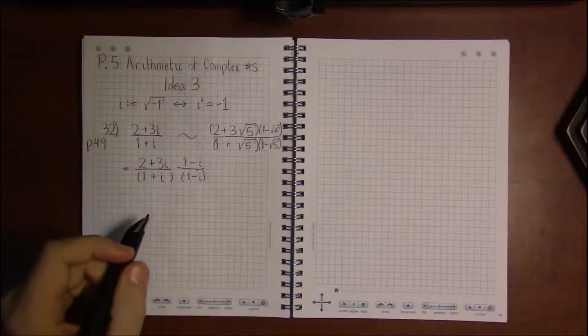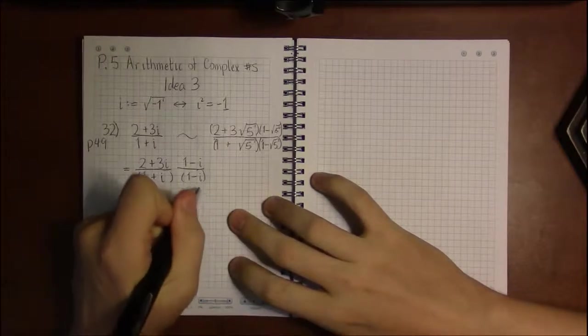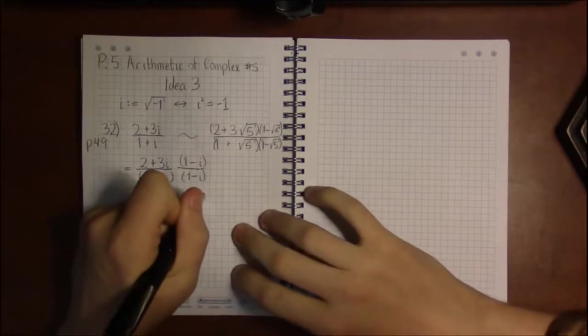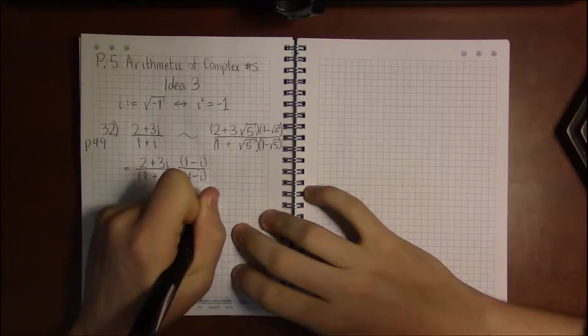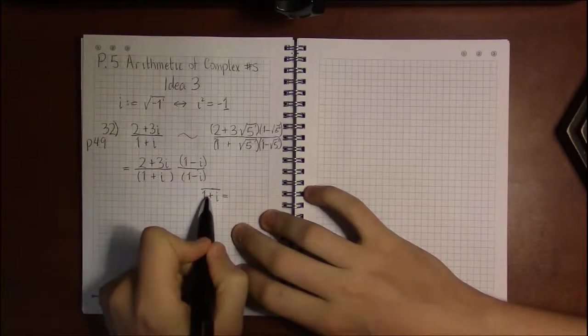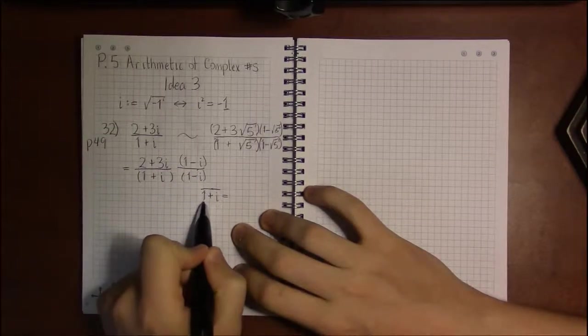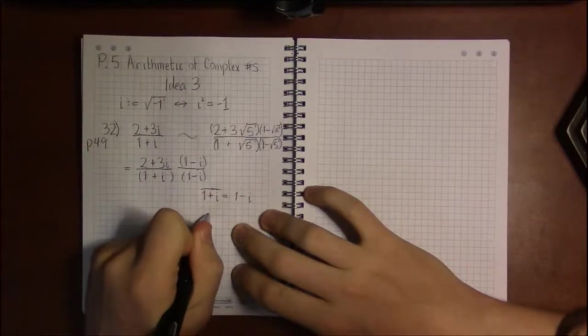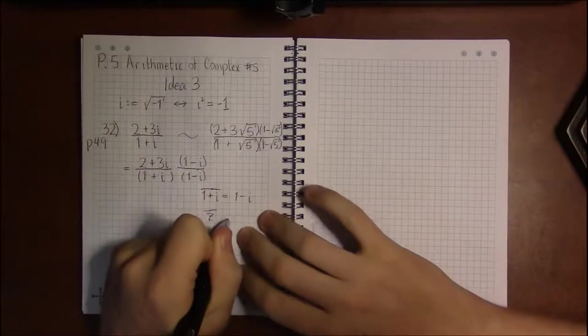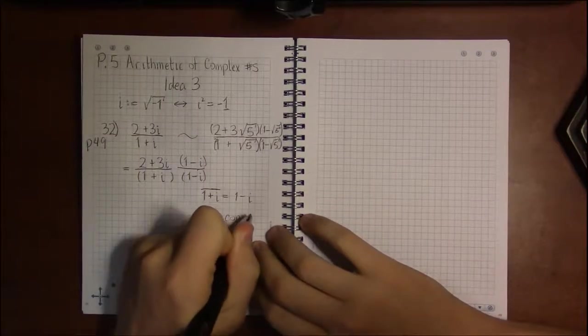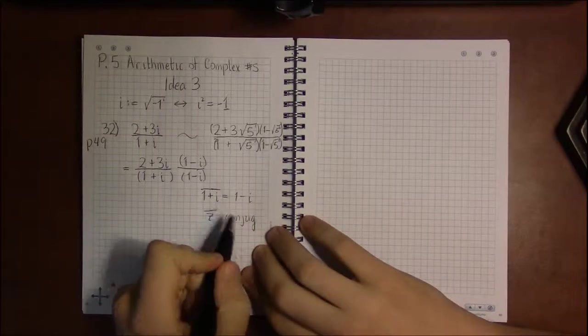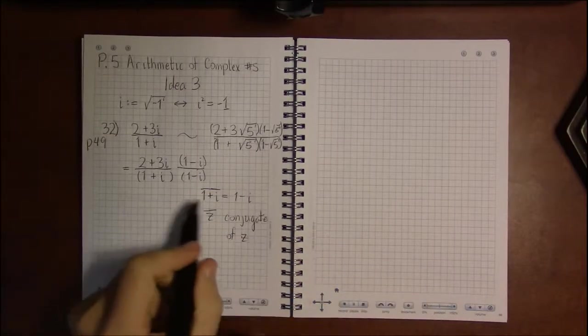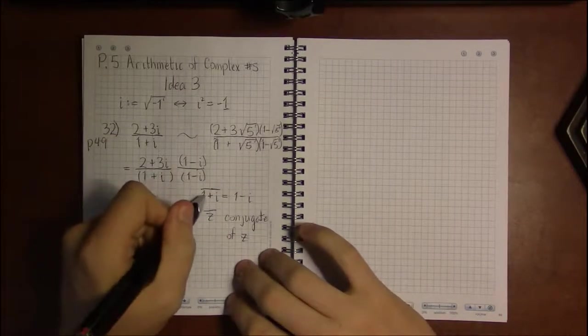You'll even see notation for conjugation in the book, denoted as a bar over the complex number. So in that notation, the conjugate of 1 plus i is 1 minus i. That bar is just a conjugate. Change the sign on i. Conjugate of z. In any case, that's just kind of a sidebar.